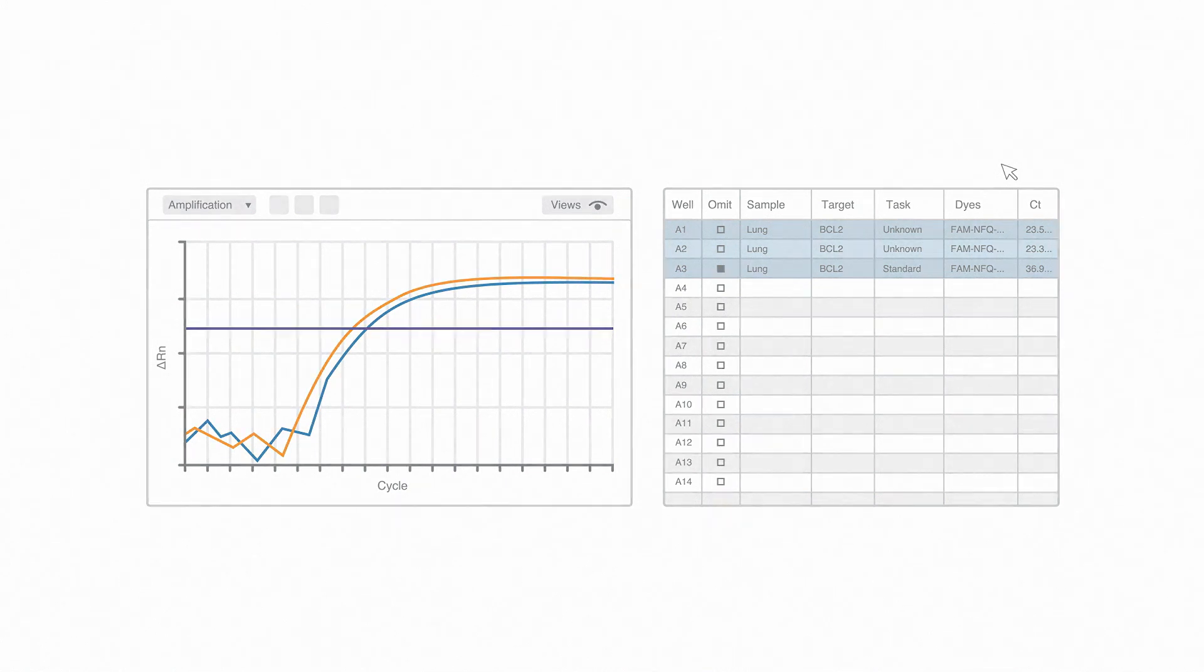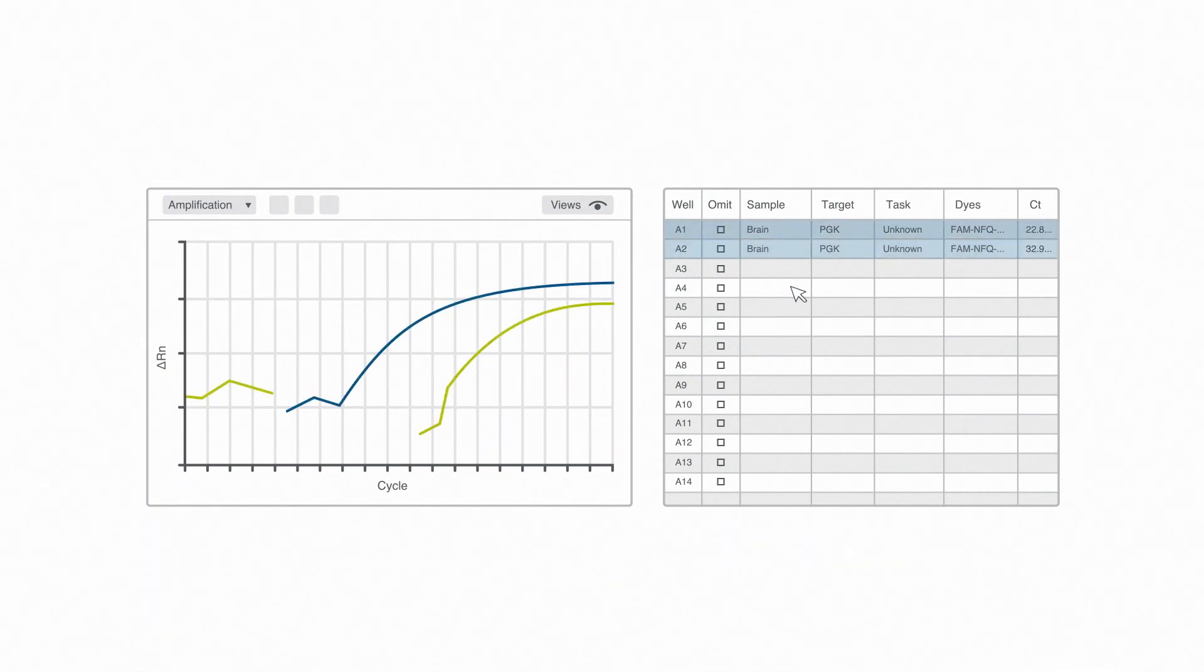But let's look at another example. What if I only ran duplicates? Now I have two samples with CTs of 22 and 31. That's a lot of variation in a replicate. I don't really want to average them, but I don't have any justification for using one over the other. Now I'm forced to omit the entire sample from my data.